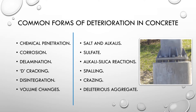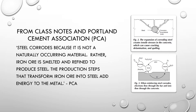Some common forms of deterioration are listed here, covered in class as well as further research. From our class notes, one of the real primary causes of corrosion is hairline cracks in the concrete. Moisture penetrates those hairline cracks, reaches the steel, begins to cause rusting. It'll expand the buildup of pressure and stresses on the inside, and then ultimately the concrete will spall off and pop off. Then there's no cover on the steel and the steel begins to rust excessively.